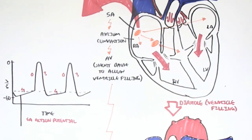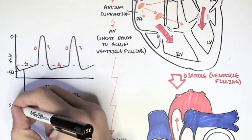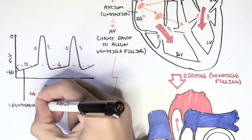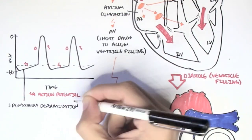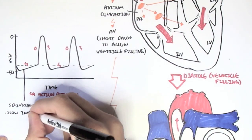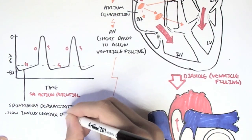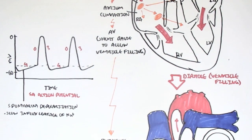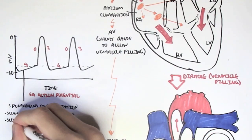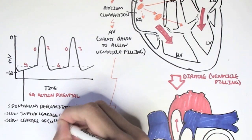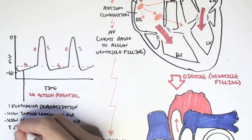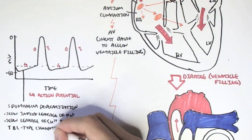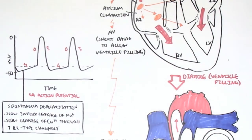Phase 4 begins at about negative 60 millivolts and is where we have spontaneous depolarization. As the name suggests, the sinoatrial node spontaneously depolarizes — becomes more positive — because of the slow influx of sodium and calcium ions, with calcium ions coming through T-type and L-type channels.